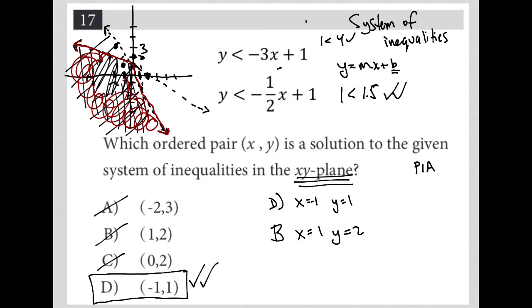So when I plug in y equals 2 and x equals 1, again, negative 3 times positive 1 is negative 3. Negative 3 plus 1 is negative 2. And it is not true, right? It is not true that 2 is less than negative 2. So even without trying the second one, automatically that would tell us that choice B is gone.